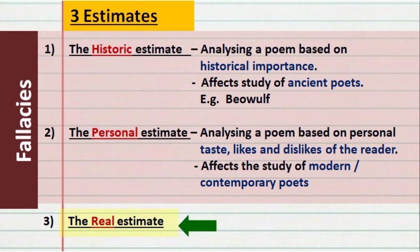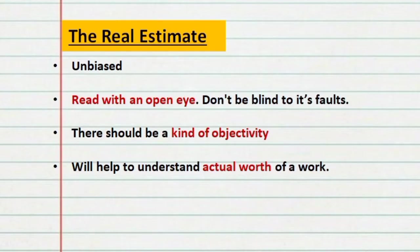What we should actually use is the real estimate, which is unbiased unlike the earlier two. This kind of analysis helps us read a work with an open eye — we are not blind to its faults. There is objectivity when analyzing a work using the real estimate, as we give neither excessive importance to historical significance nor to personal taste. This helps us understand the actual worth of a work.